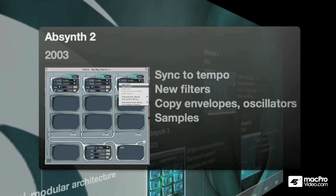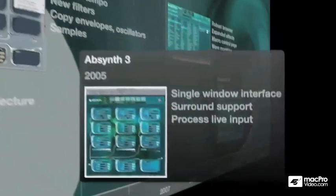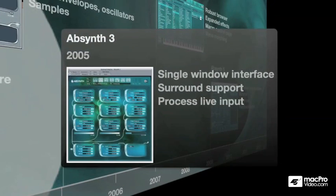By 2005, Absinthe III was really becoming a robust product. It had a new look, a new single window interface, it had surround support, and it had the capability of processing live input.